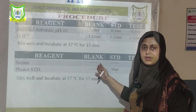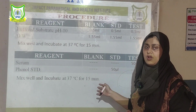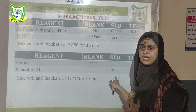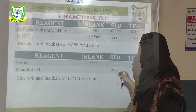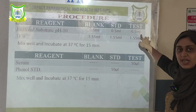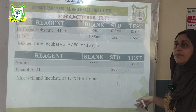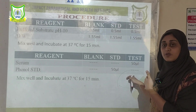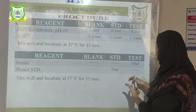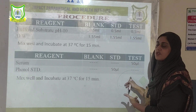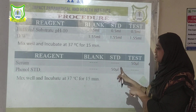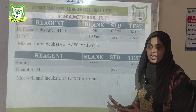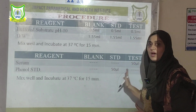In the blank there is no serum and no phenol standard. In the standard there is no serum — we add a known amount of phenol. In the test we add everything including substrate, distilled water, and serum, but not standard. These three conditions must be remembered: what goes in blank, what goes in standard, and what goes in test.